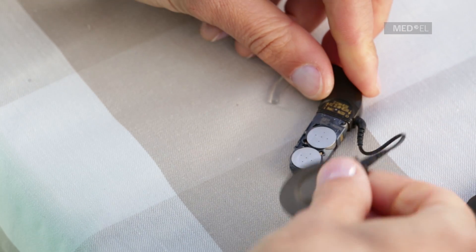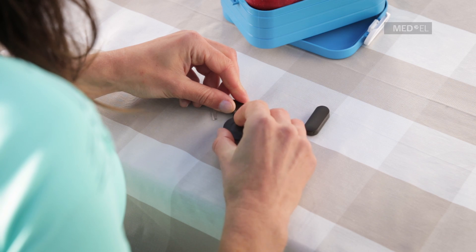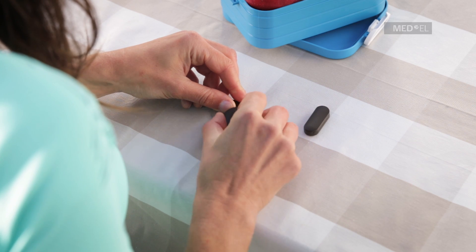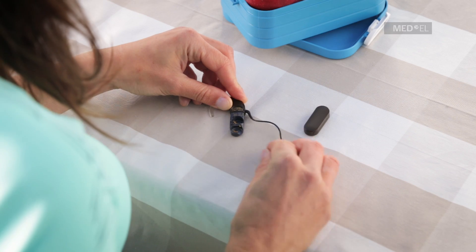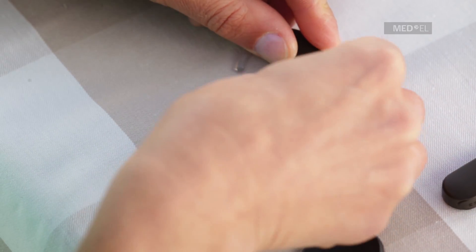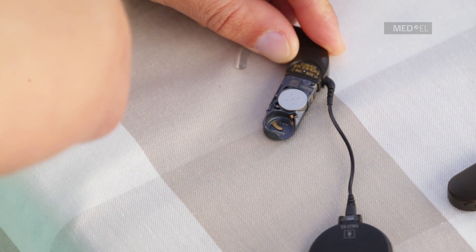Remove the batteries from the battery pack frame by using the magnet of the coil. Insert the batteries into the battery pack frame with the positive poles facing out.